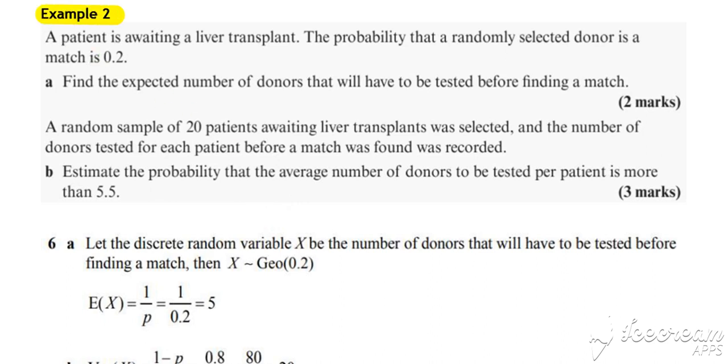In Example 2, if we look at our initial statement: a patient is awaiting a liver transplant, the probability that a randomly selected donor is a match is 0.2. Find the expected number of donors that will have to be tested before finding a match.